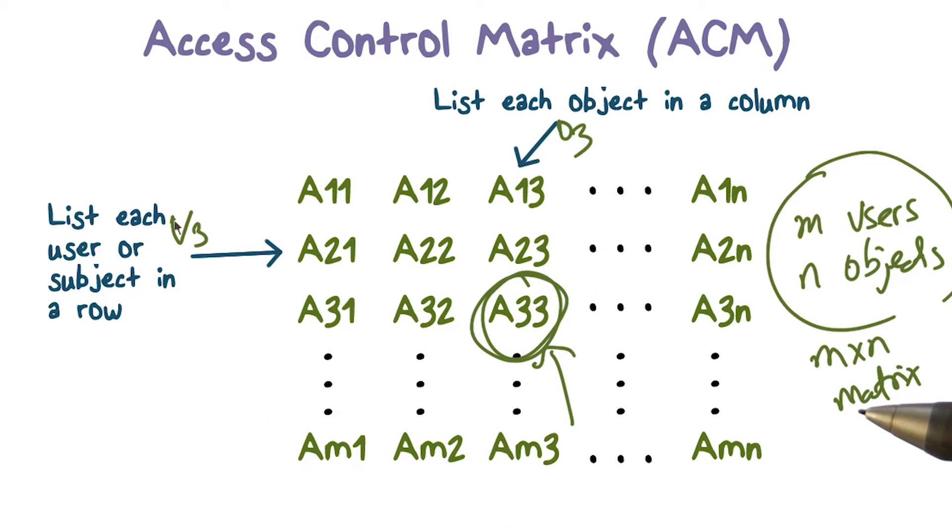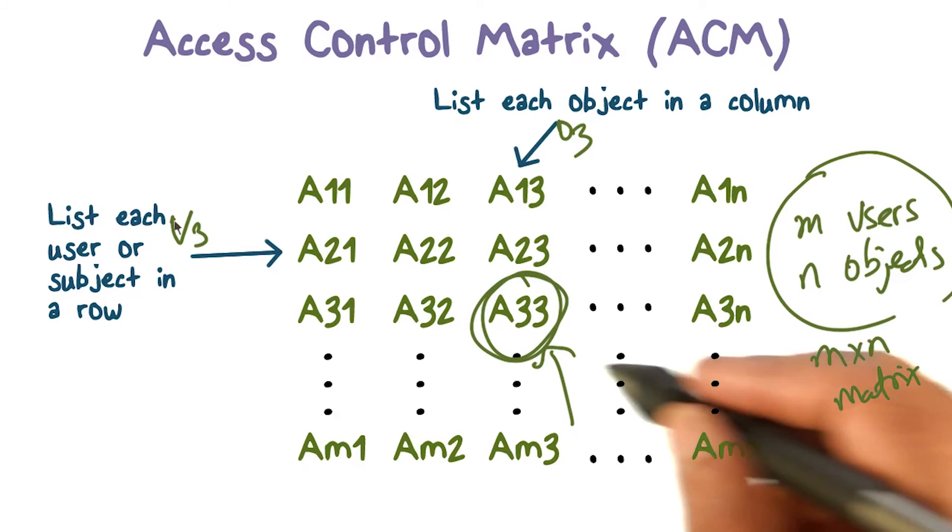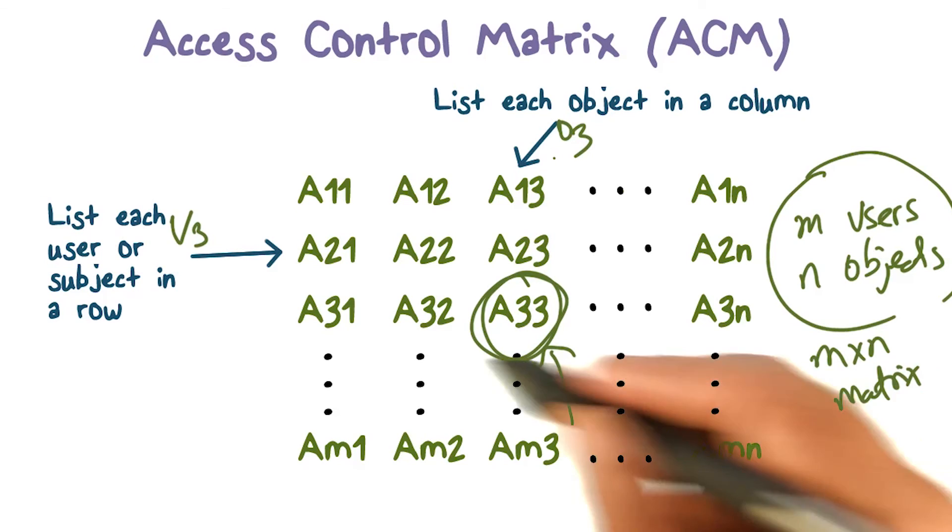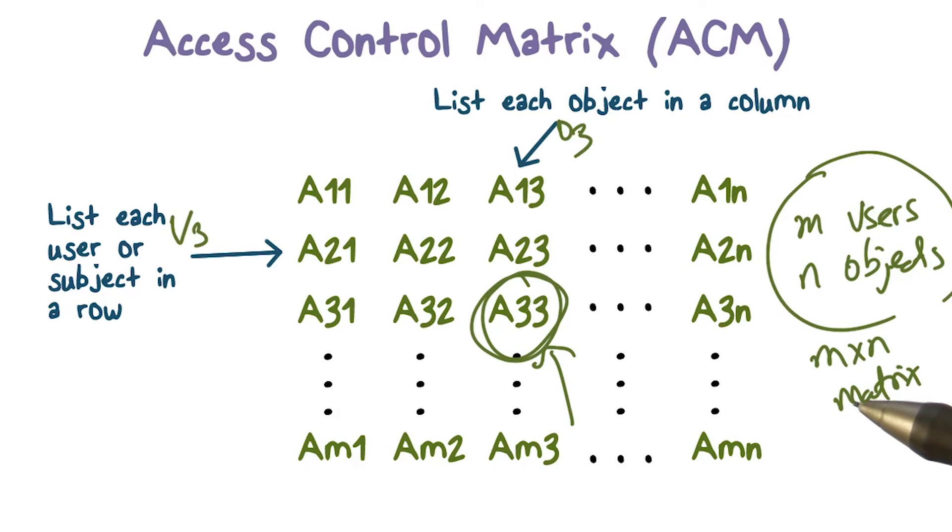Depending on what kind of object this is, we've been talking about file objects that contain data which can be read or written. The access rights for a file may be read, write, and execute. This could be some subset, or this could be nothing, meaning user 3 cannot access object O3 in any way. If it just has read, then reads are allowed, but user 3 cannot write or execute the file. If it has read, write, execute, then user 3 is allowed to read, write, or execute this file that corresponds to object O3.